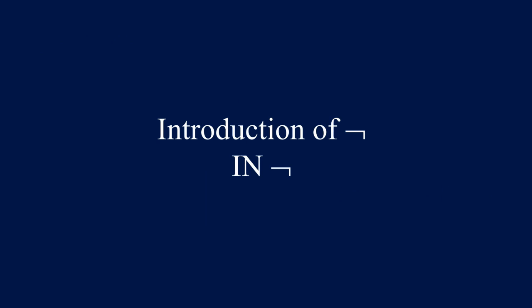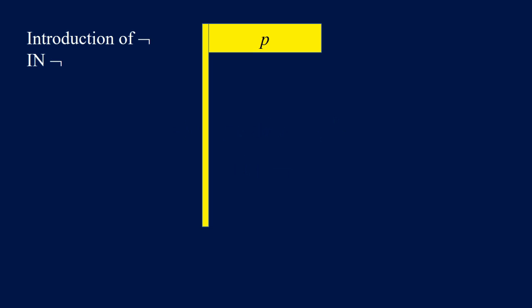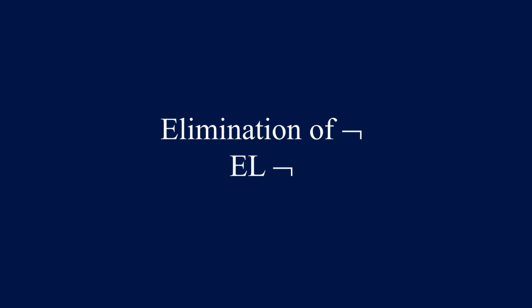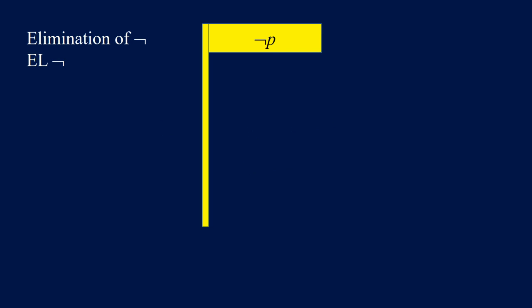Introduction of NOT — we're going to use IN NOT for reasoning. If we have P in the flag and we have false F somewhere under the flag, then we can conclude NOT P under the pole. This is also called the rule of contradiction. Elimination of NOT — we're going to use L NOT for reasoning. If we have NOT P in the flag and we have false under the flag, then we can conclude P under the pole. This is also called the rule of contradiction.